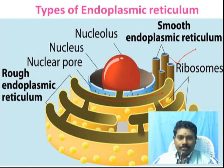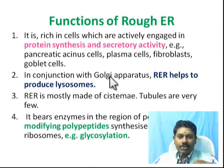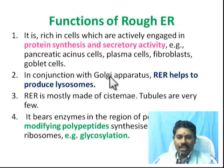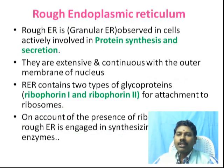Rough ER regions possess enzymes involved in glycosylation. If you have a functional protein, you can add glycosylation to it. Glycosylation is a very common post-translational modification performed on proteins in the rough ER.